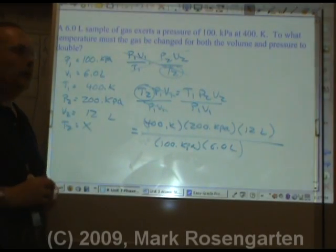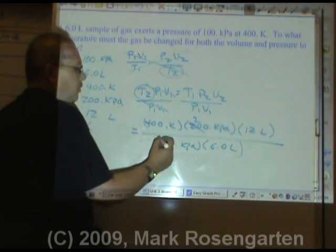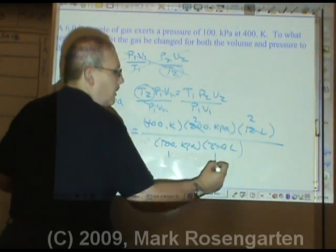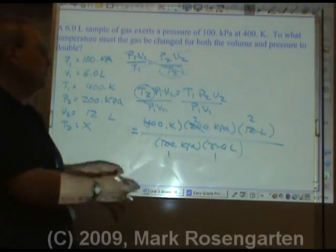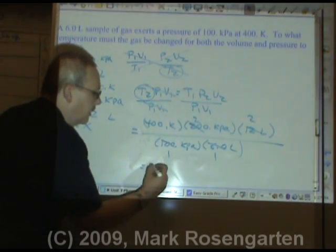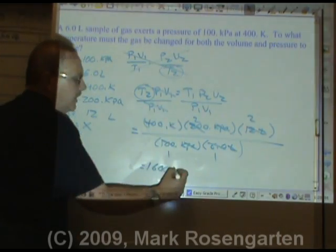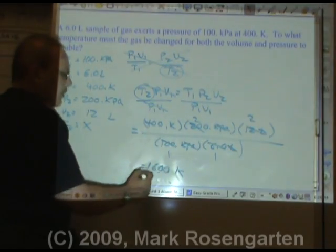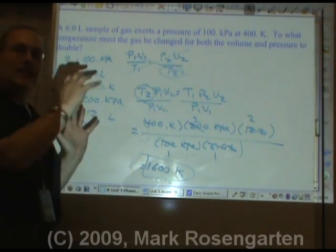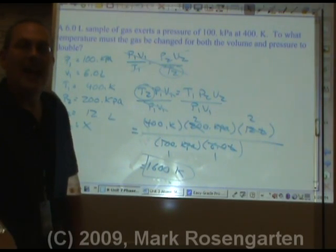Now plug in the numbers: T1·P2·V2 over P1·V1. Notice how things simplify: 200 over 100 is 2, and 12 over 6 is 2. So 400 × 2 × 2 = 1600 Kelvin — you don't even need a calculator. Kilopascals cancel, liters cancel, leaving Kelvin. Two sig figs throughout — we're good to go. That's how to solve gas law problems: they all use the same approach; the only difference is what you're solving for, and for that you need algebra.